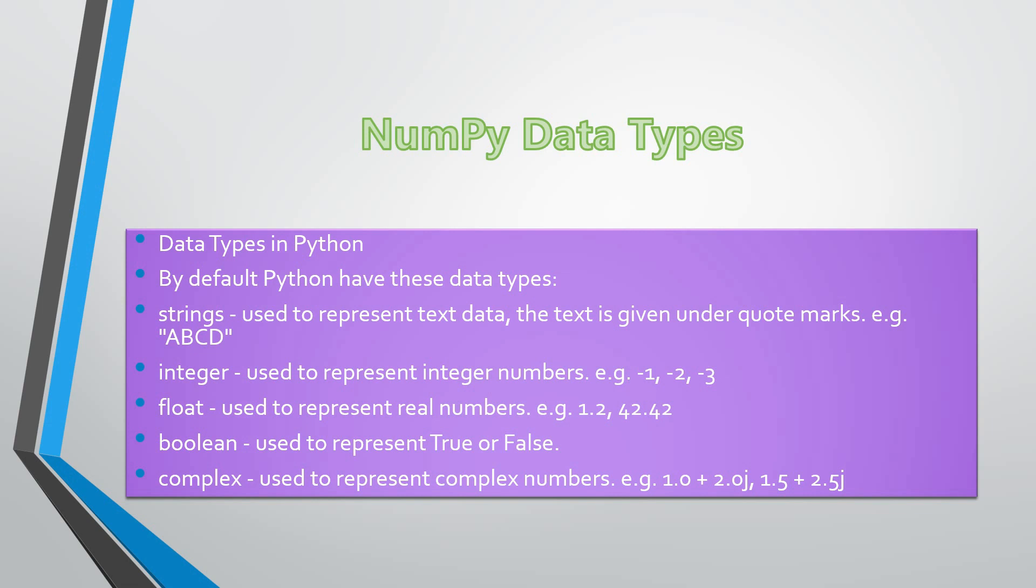By default, Python has these data types. They have string used to represent text data. For example, it will be defined within double quotes like A, B, C, D, something like that. For integers, it can be defined as minus 1, minus 2, 3, 4, 5, 6, 7.